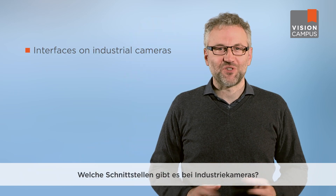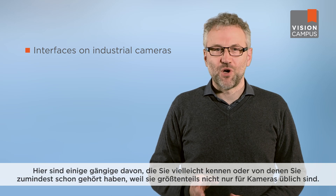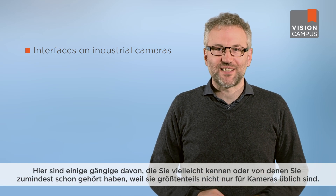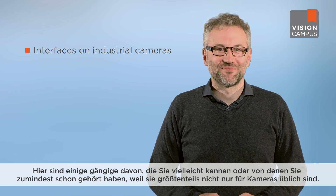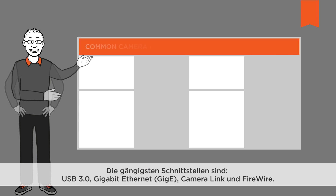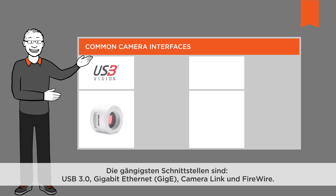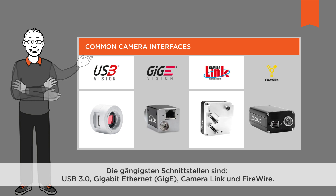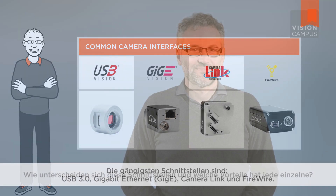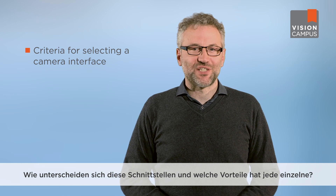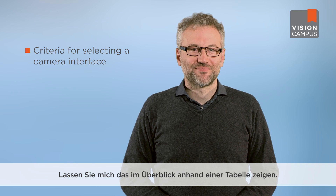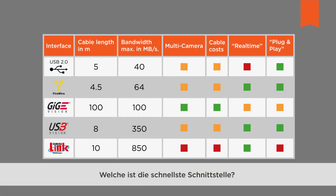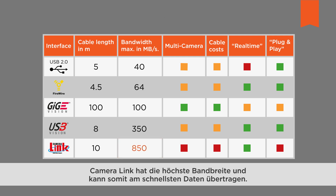What interfaces are found on industrial cameras? The following are the most common — you will very possibly know, or at least have heard of them, since they are frequently used beyond cameras as well. The most common interfaces are USB 3, Gigabit Ethernet, Camera Link, and Firewire. Camera Link has the highest bandwidth and as such can transfer data faster than the others. Unlike USB, however, it is not plug-and-play compatible. GigE supports the longest cable length.